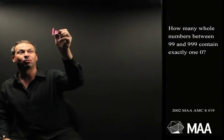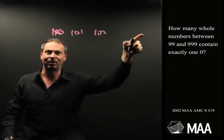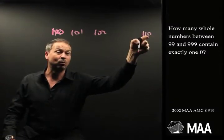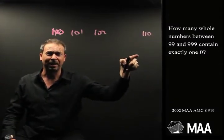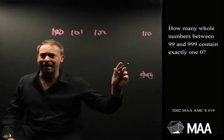So the first number we could consider is 100, but that contains two zeros. 101 has one zero, 102, 103, 109, 110 works, 111, 112, and I guess it can go all the way up to 999, but as I said, we wouldn't consider that because it has no zeros.